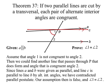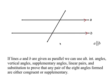Angle 1 must be congruent to angle 2. If lines A and B are given as parallel, we can use alternate interior angles, vertical angles, supplementary angles, linear pairs, and substitution to prove that any pair of the eight angles formed are either congruent or supplementary.